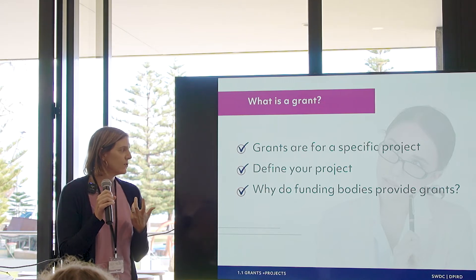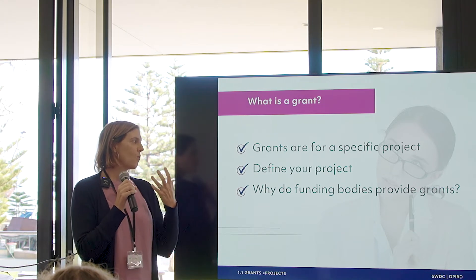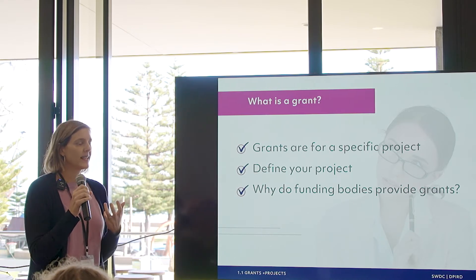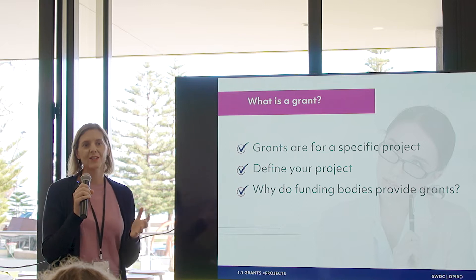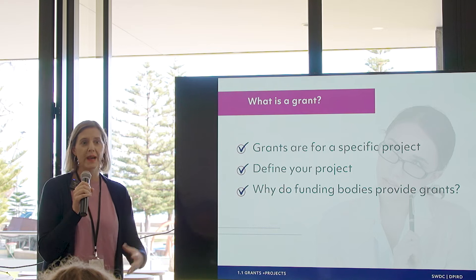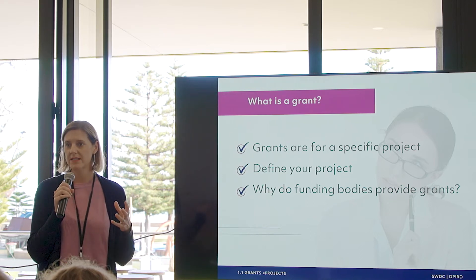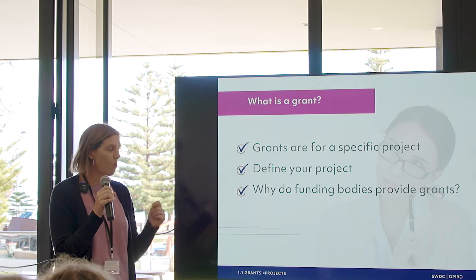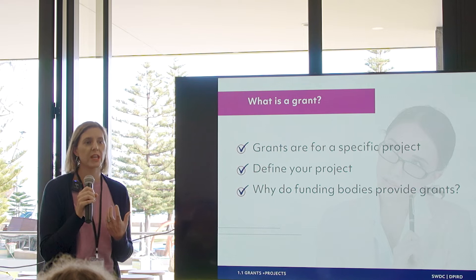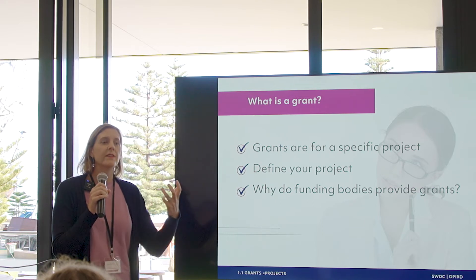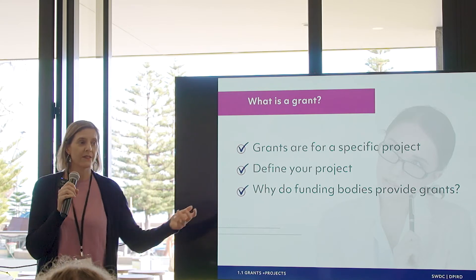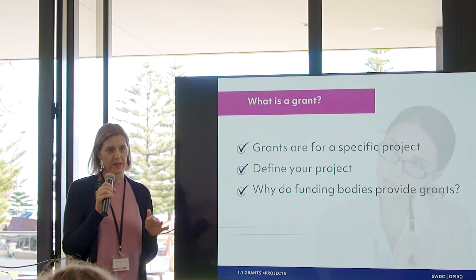The other thing you need to know about is why funding bodies are providing the grants. Why a funding body is giving out the money will mean everything to your planning and to your deciding which project you do, because you may have a couple of different projects in mind — which one you choose will be dependent on why that funding body is providing that grant. You need to think about what are they trying to achieve? Because if you are giving them what they're trying to achieve, you've got more chance. If you're not giving them what they're trying to achieve, there's no way you're getting the money.